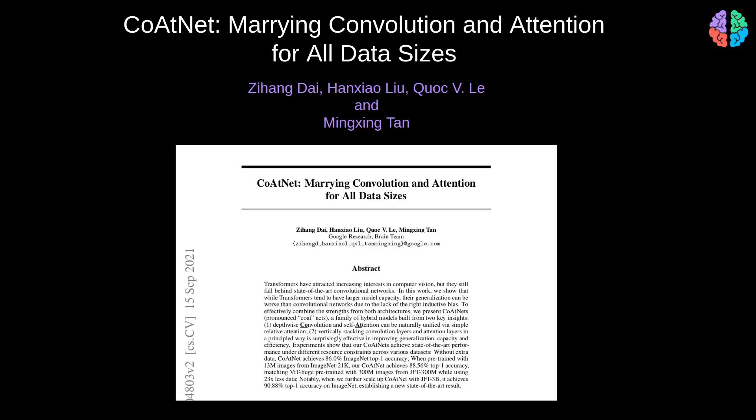The strength of CNNs is the ability to generalize far better than transformers. On the other hand, transformers have huge model capacity. So, can we combine self-attention mechanism with CNNs to make the best of both worlds?